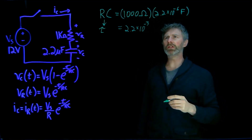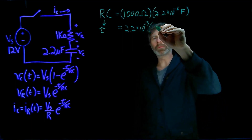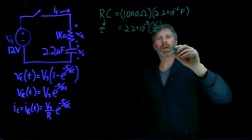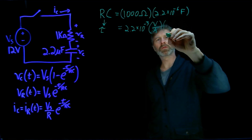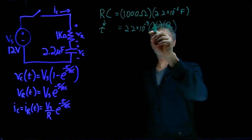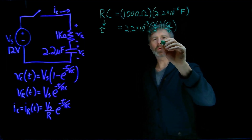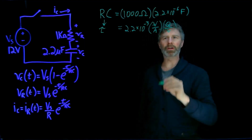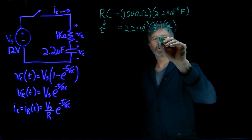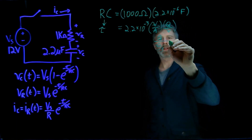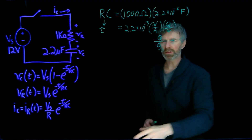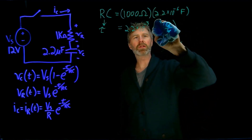Now what about the units for this? Well, ohms — if we break ohms down — that's going to be volts per amp, and if we break farads down, farads are charge per volt. In these units the volts will cancel out, and we get charge per amp. And if we remember that an amp is charge per second, those charges cancel out, and what we end up with is simply the unit of seconds. So this tau, this R times C, is in units of seconds.